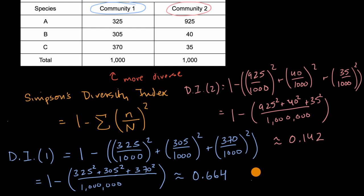And so we see very clearly, when we use Simpson's diversity index, that consistent with our intuition, community 2 has a lower diversity index than community 1. And it's consistent with our intuition that it is less diverse. And I encourage you, after this video, think about why that makes mathematical sense.